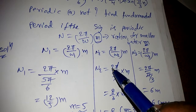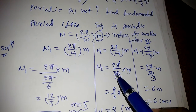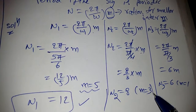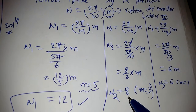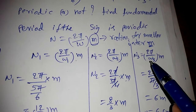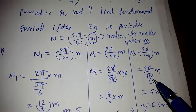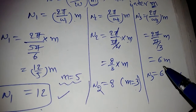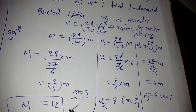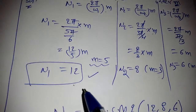For N2: (2π)/(3π/4)·m = (8/3)·m. The smallest integer m is 3, giving N2 = 8. For N3: (2π)/(π/3)·m = 6m. For m = 1, N3 = 6. All three components are individually periodic.